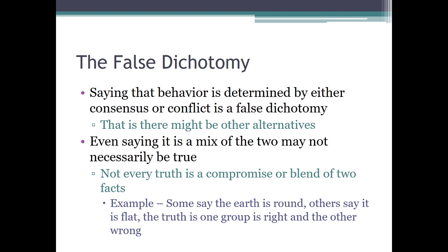Saying that behavior is determined by either consensus or conflict is false — there may be other alternatives. Even saying it's a mix of the two may not be true. I do not want people to say, Charlie says A, John says B, so the truth is somewhere in between. Not every truth is a compromise or a blend of two facts. For example, some people say the world is round and some say it's flat. Well, the truth is one group is right. The world is round, period. It's demonstrably, objectively false to think the world is flat.